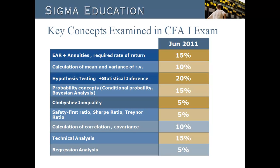Based on previous exams, these are the common topics of questions that appear in the CFA Level 1 exam. Calculation of effective annual rate, bond equivalent yield, present values of cash flows, annuities, and calculation of asset returns accounts for roughly 15% of the exam. Probability concepts accounts for roughly 15% of the total questions examined in previous exams.